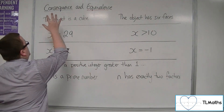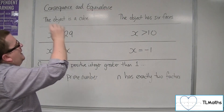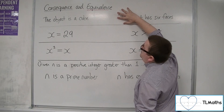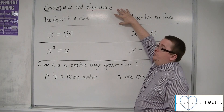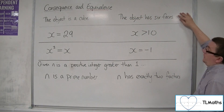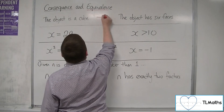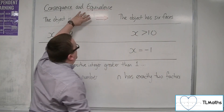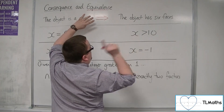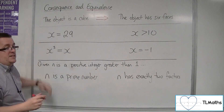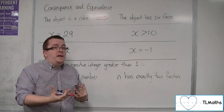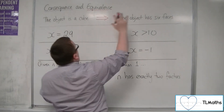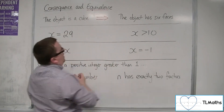Let's start with the first example at the top: 'The object is a cube' and 'The object has six faces.' If the object is a cube, then it definitely has six faces, so the arrow works from left to right. But if we just consider that the object has six faces, does that necessarily mean the object is a cube? No, because the object could be a cuboid, for example. So the arrow points only from left to right in this case.